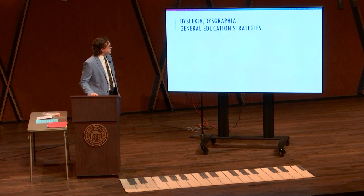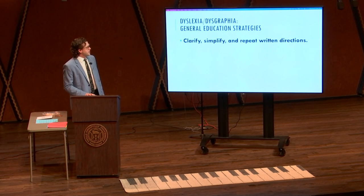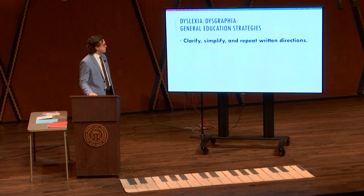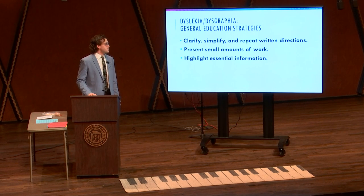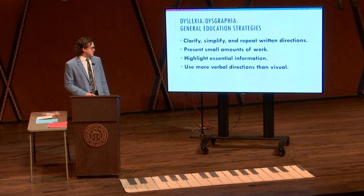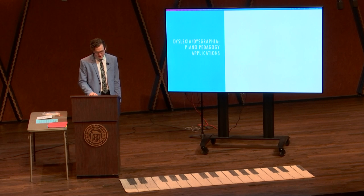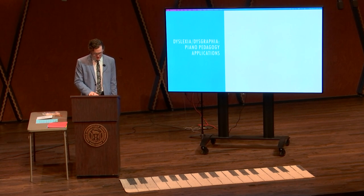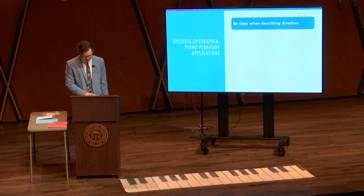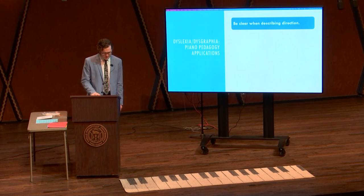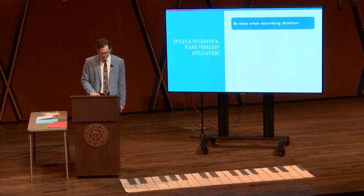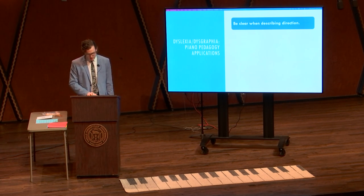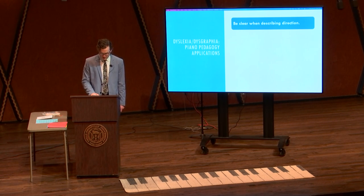Some general strategies in education would be to clarify, simplify, and repeat written directions. Present small amounts of work, highlight essential information, and use more verbal directions than visual. Being specific in your lesson time with a dyslexic student: be clear when describing direction — directions of notes, high to low, staff reading, etc. Be prepared to explain using multiple sensory strategies, such as pointing, verbal instruction, and having the child move up and down the bench. This offers support in the spatial component of music reading — the discrimination between high and low, between rising and descending patterns.